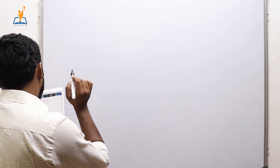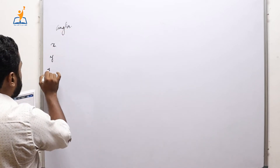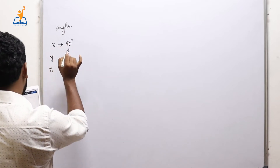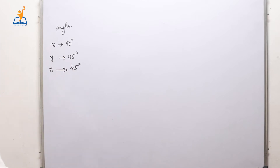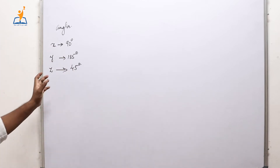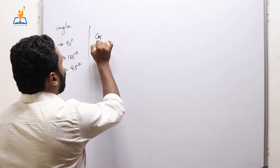Today we are going to discuss Exercise 11.1. Question number one: if a line makes angles 90 degrees, 135 degrees, and 45 degrees with the x-axis, y-axis, and z-axis respectively, find its direction cosines. We have to find the direction cosines of the line which makes angles 90 degrees, 135 degrees, and 45 degrees with respect to x-axis, y-axis, and z-axis.